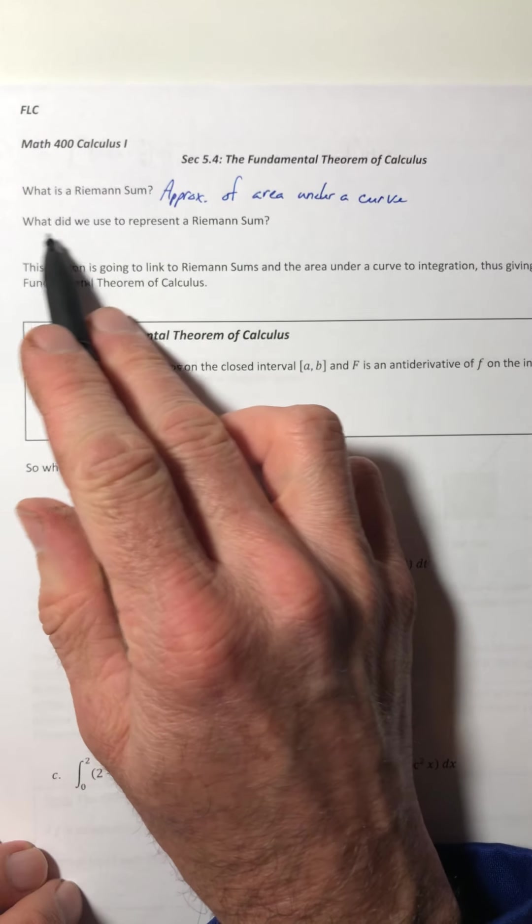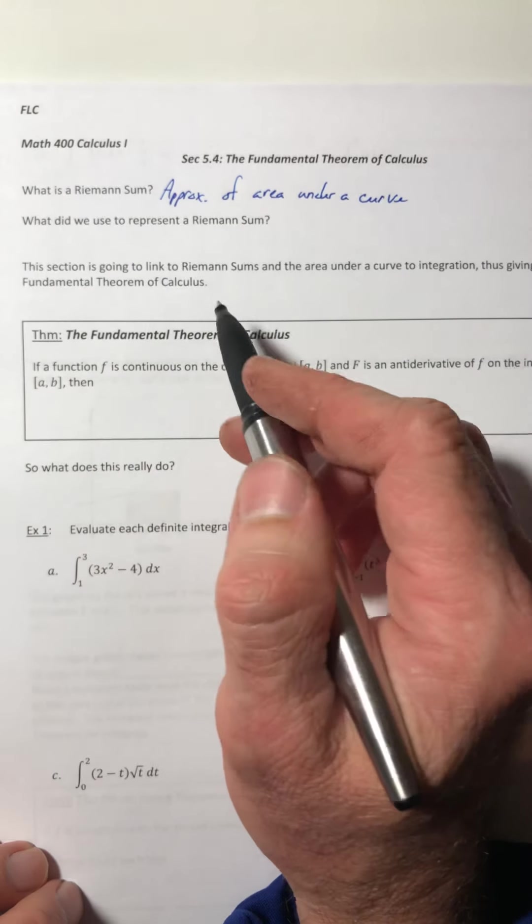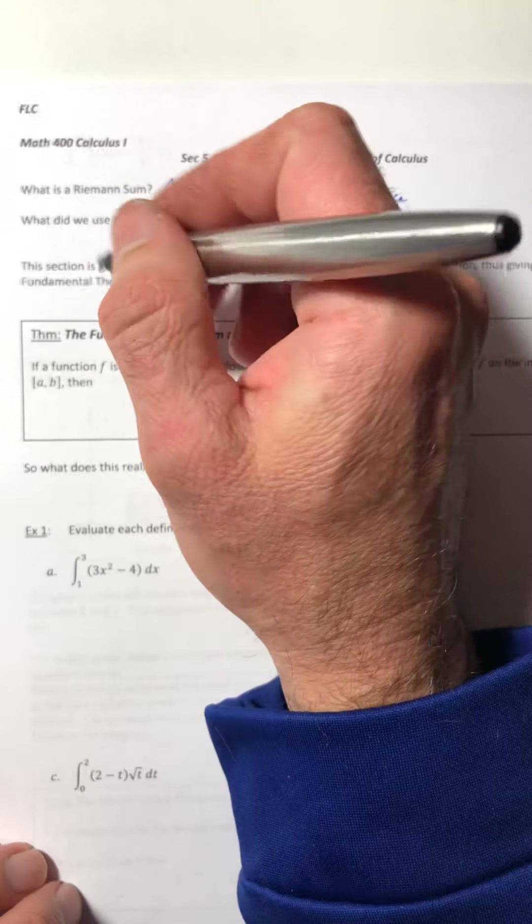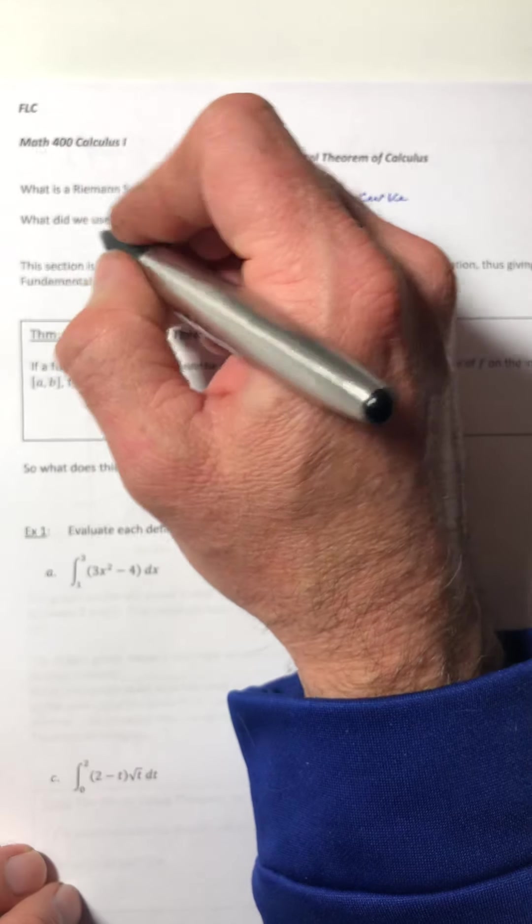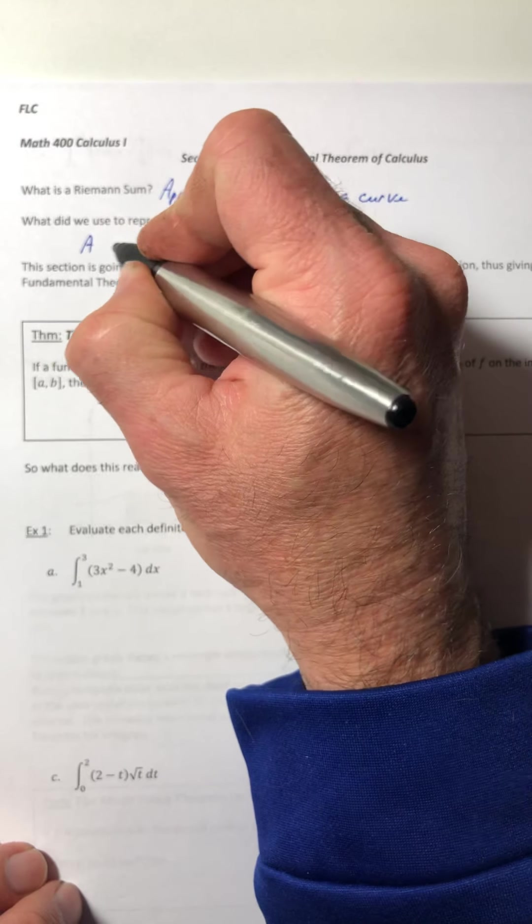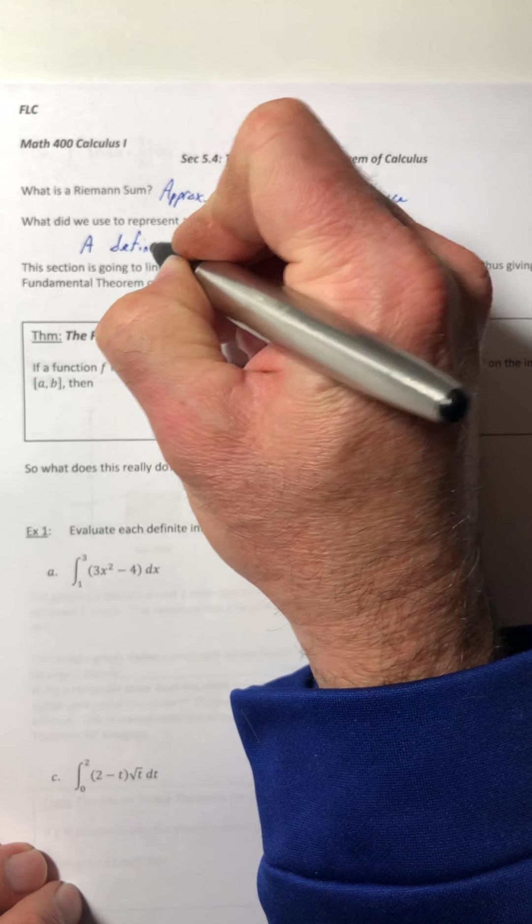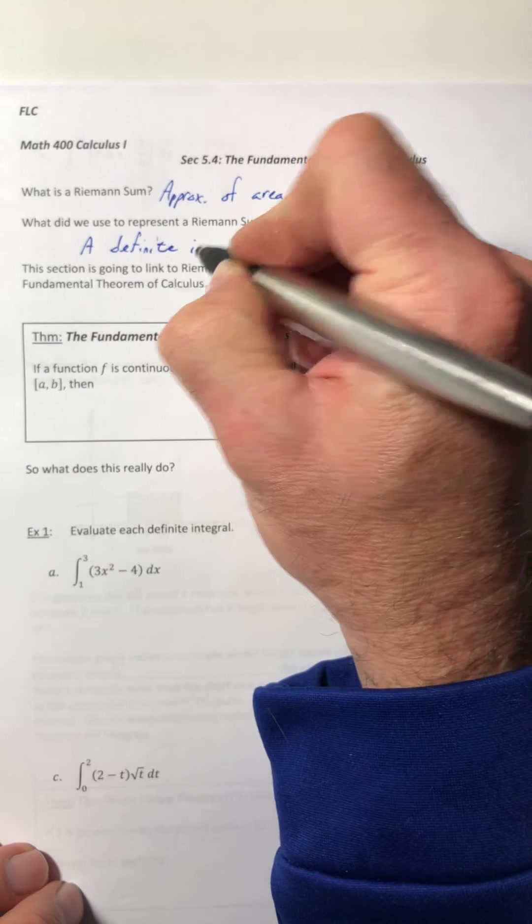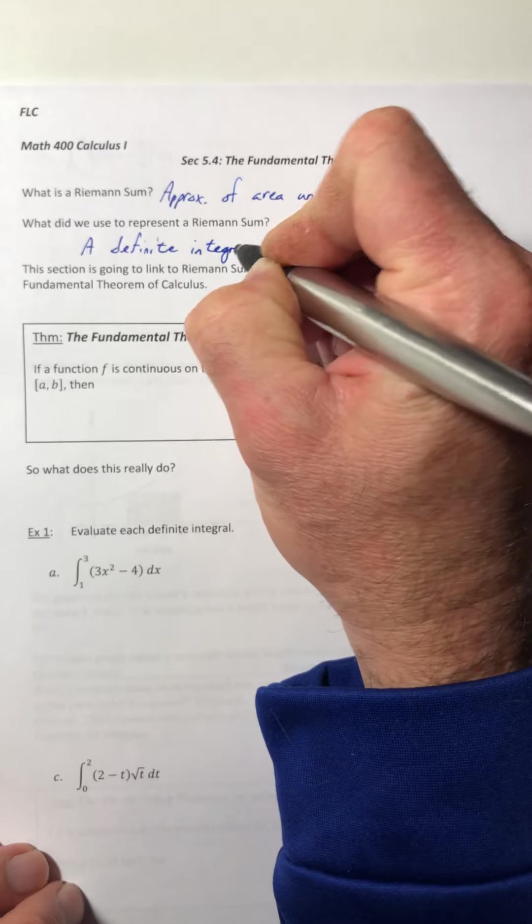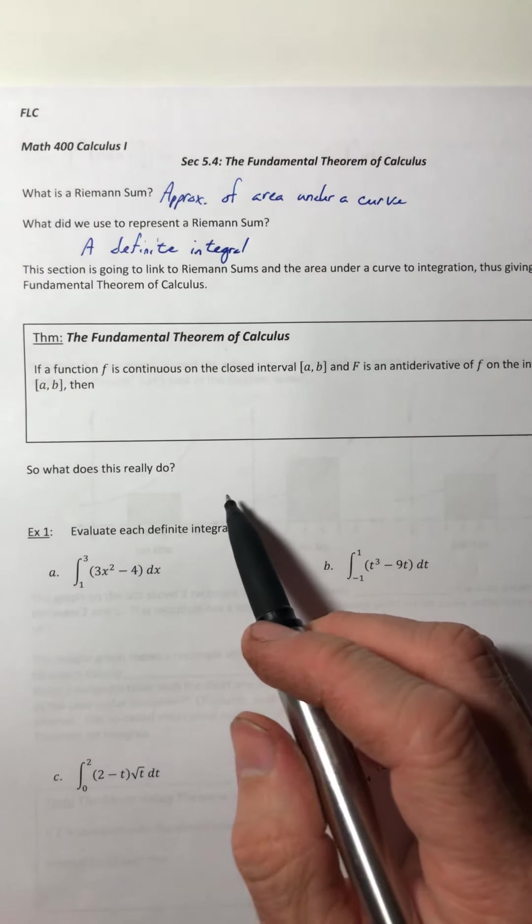And what did we use to represent it? Well, we could use that big limit thing, or we could just use a definite integral. That was a lot nicer.